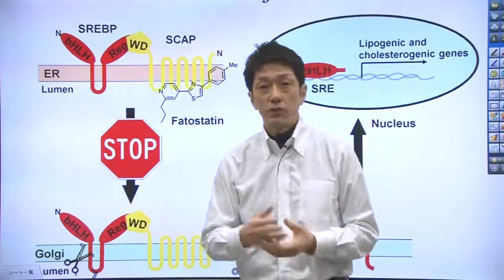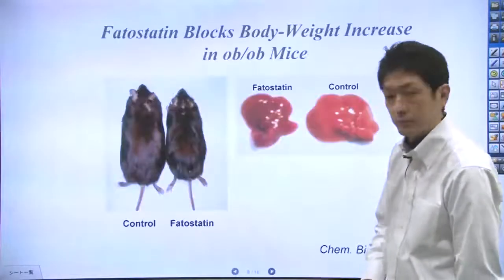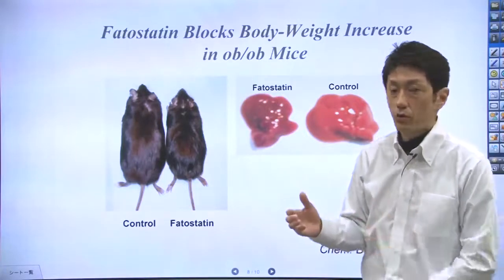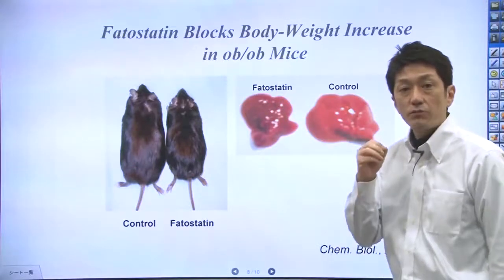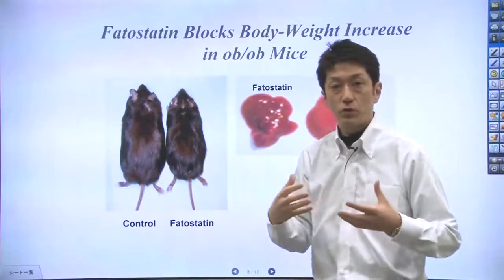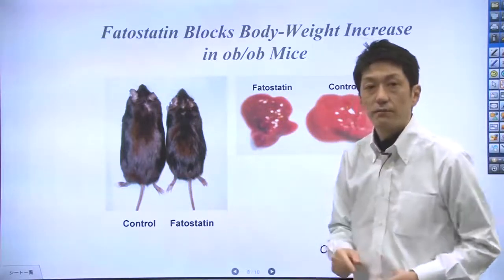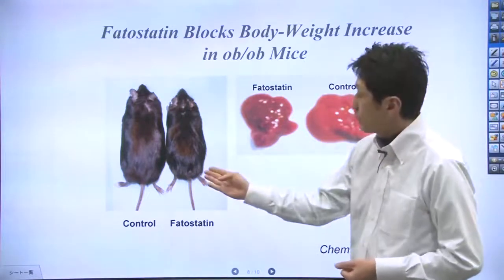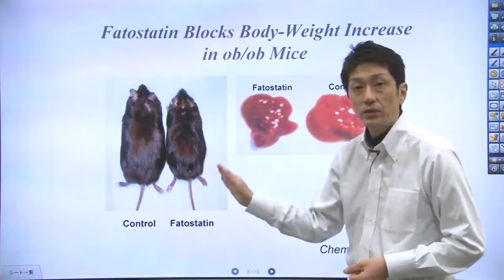What happens if we inject fatostatin into experimental animals? When we inject fatostatin into an obese mouse model called OB-OB mice, without injection the mice would have continued to overeat and get really fat. When mice were treated with fatostatin, mice looked thinner, although they ate equally well.